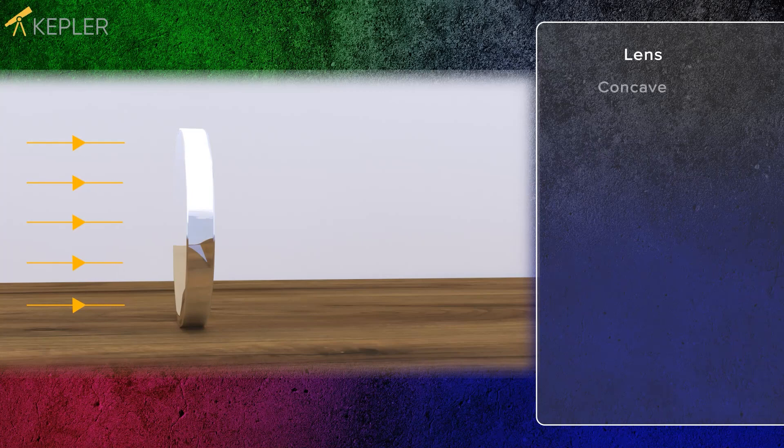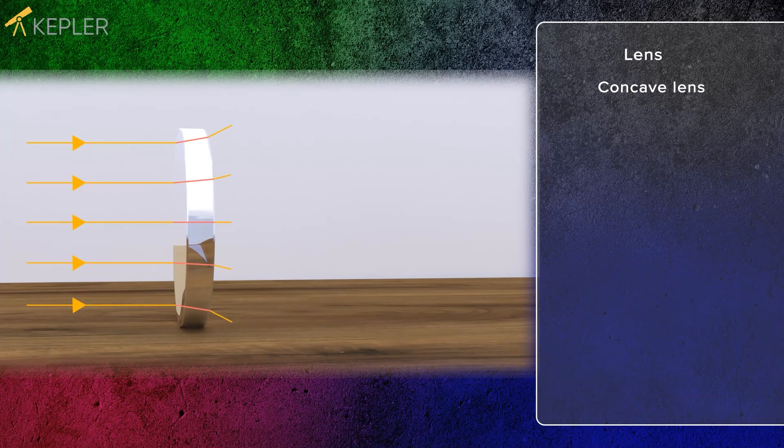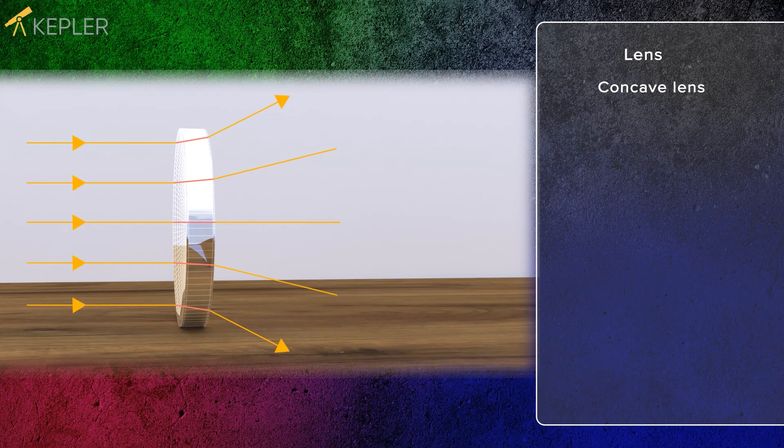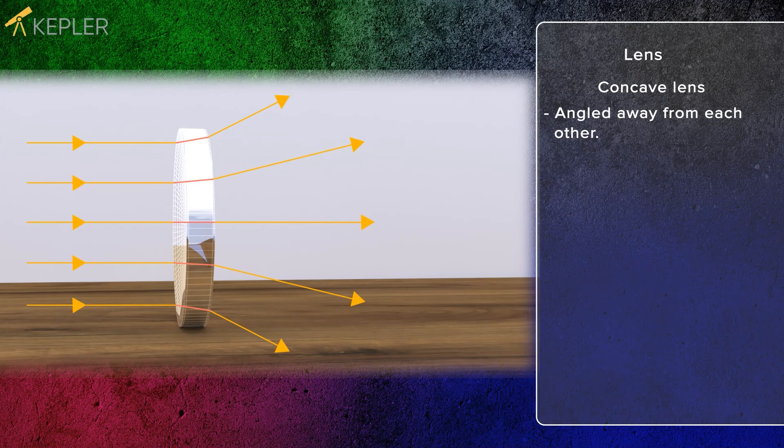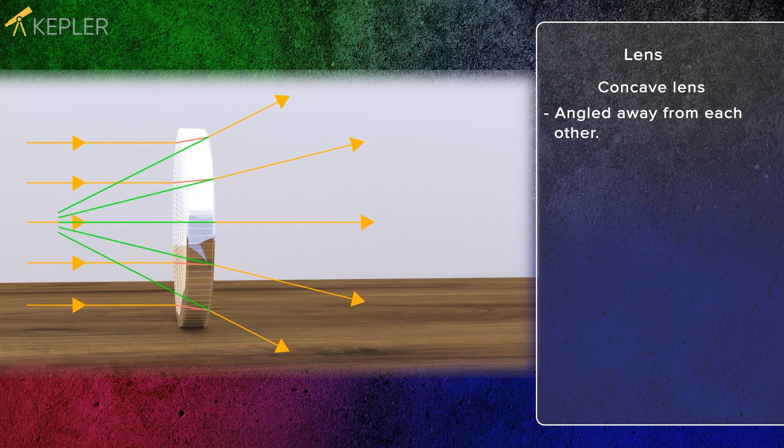The light rays move straight ahead until they are broken. If the rays are refracted by a concave lens, they will be angled away from each other. If you extend two lines from the lens where the light is scattered, the two lines will cross behind the lens.